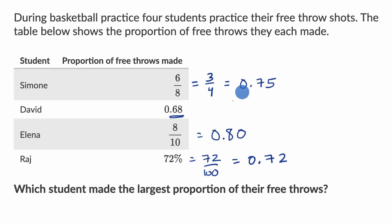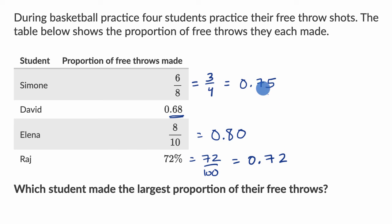So now it's easy to compare them. It looks like David has the lowest proportion of free throws made, and then the next lowest is going to be Raj, and then the next lowest — or second to highest — is Simone, and then the highest proportion of free throws made looks like it is Elena, and we are done.